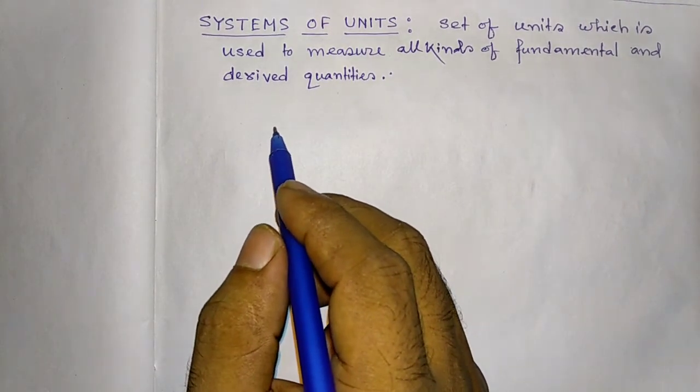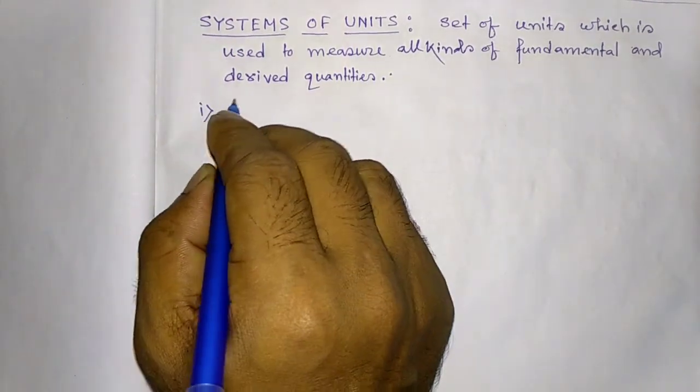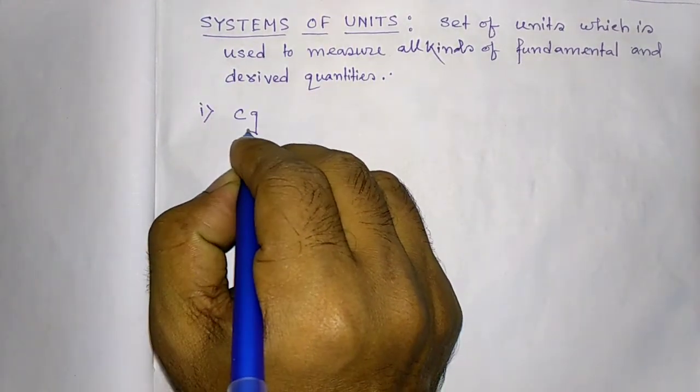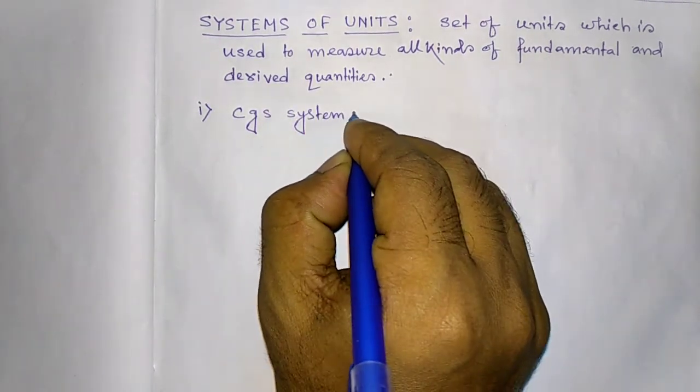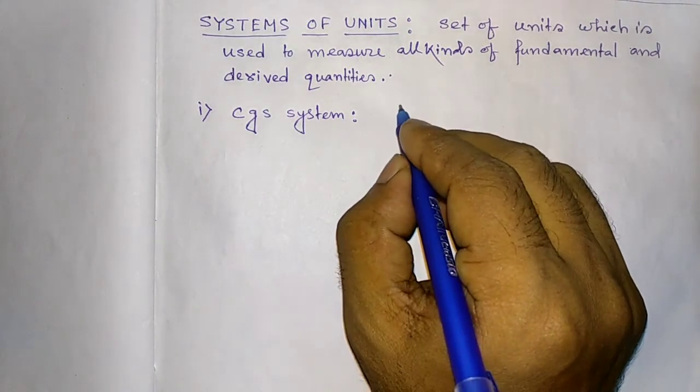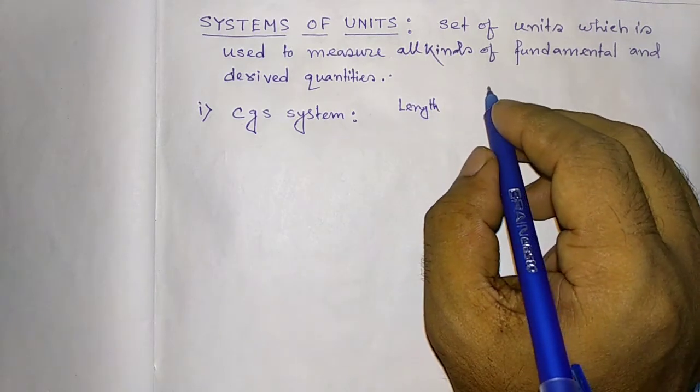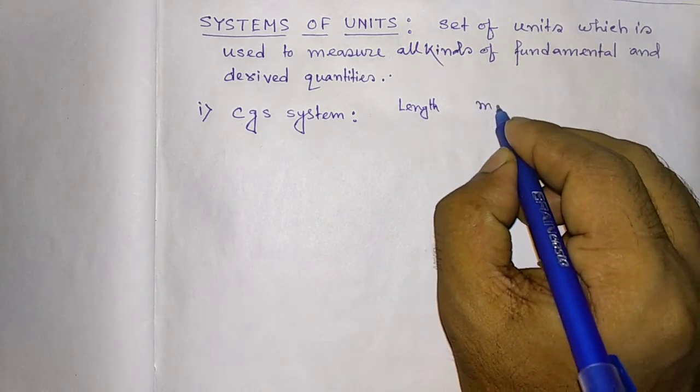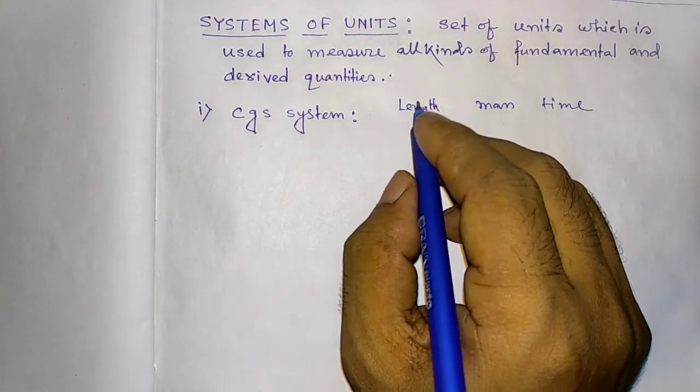There are some commonly used system of units. Number one is CGS system where the unit of length, mass and time is respectively